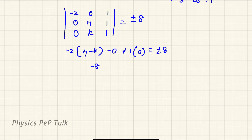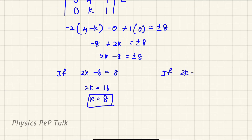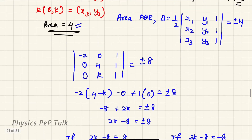So minus 8 plus 2k equals plus or minus 8. So 2k minus 8 equals plus or minus 8. From this, if 2k minus 8 equals plus 8, then 2k equals 16, so the value of k equals 8. If 2k minus 8 equals minus 8, then 2k equals 0, so k equals 0. Therefore the value of k is either 8 or 0.